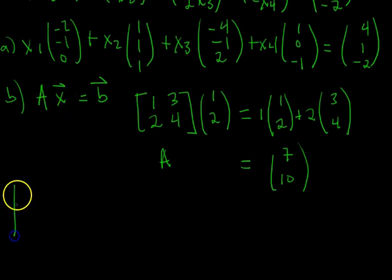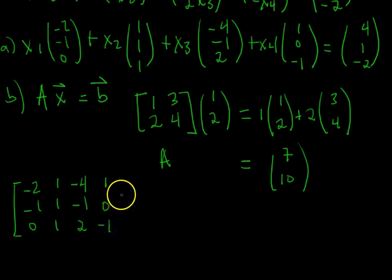So let's make our A matrix. There's all of these vectors as the columns. So negative 2, negative 1, 0, 1, 1, 1, negative 4, negative 1, 2, and then 1, 0, negative 1. So there's our A matrix. Then the vector x is composed of the unknown variables. So x1, x2, x3, and x4.